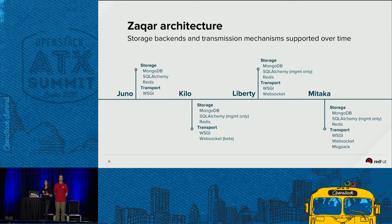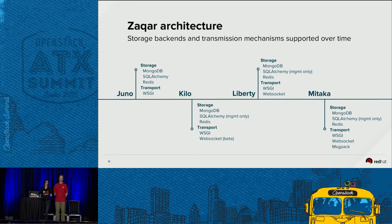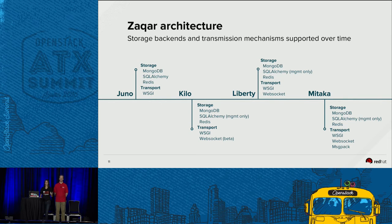Let's give a brief overview of how Zakhar has been evolving. Zakhar used to be named Marconi — it's a long story. It started with support for MongoDB, SQLAlchemy, and Redis for the data plane. We noticed transactions were not handled well in MySQL, so we stopped supporting it in Kilo, keeping SQLAlchemy only for management. We started implementing beta support for WebSocket in Kilo, which became highly available in Liberty. The latest addition in Mitaka is full WebSocket support — you can transmit plain and binary messages using MessagePack to save resources in transmission.